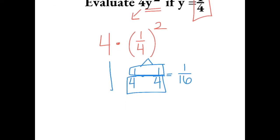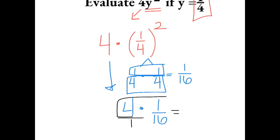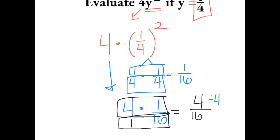Now we can bring down the 4 and multiply it with 1 over 16. We can put a 1 underneath our whole number. This gives us 4 times 1 is 4, and 16 times 1 is 16. We can simplify this by dividing the numerator and denominator by 4, and we get 1 fourth.